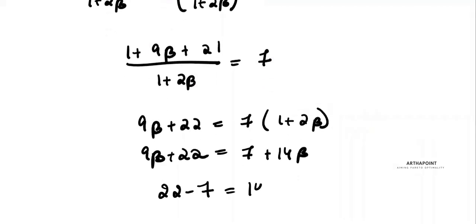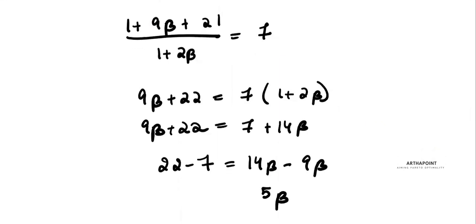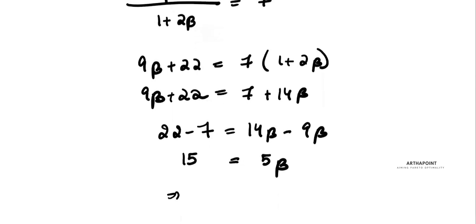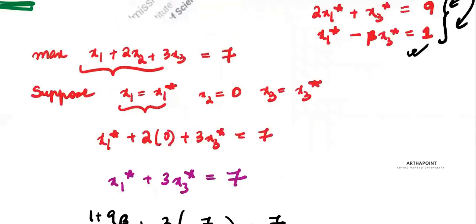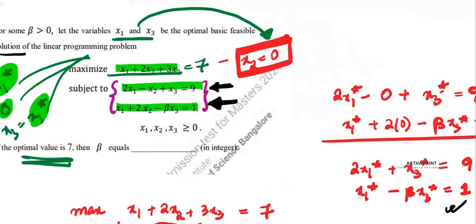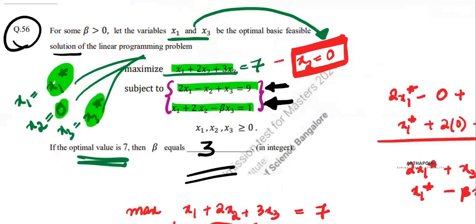So 22 minus 7 equals 14 beta minus 9 beta, giving 5 beta equals 15, therefore beta equals 3. The answer is beta equals 3. It was a simple question — the key insight was that since x1 and x3 are the optimal solution, x2 must be 0.